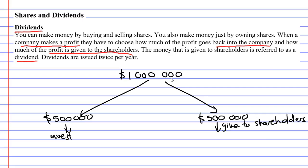we're going to give to our shareholders and make our shareholders happy. Now, if this company was split into, let's say, 500,000 shares, how much money would you get for each share you own? Well, you would get $1 per share, meaning that if you had 400 shares, you would get $400. If you had 100,000 shares, you would get $100,000.